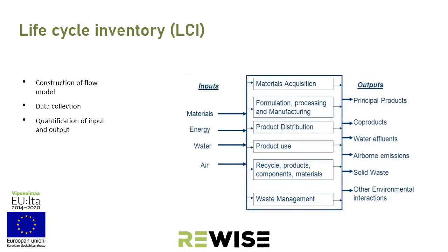The next step is life cycle inventory. In this stage, we construct the flow model, covering the whole life cycle stages of a product — raw material extraction, transportation, production — and we collect all the data needed. For example, we need 200 grams of PVC, we use 20 kilowatt hours of electricity, we generate 20 grams of PVC waste. We list all the inputs and outputs and quantify everything.